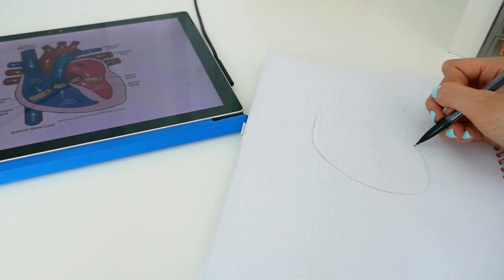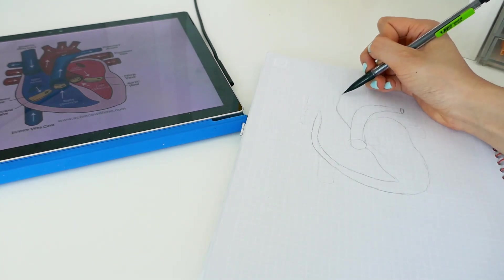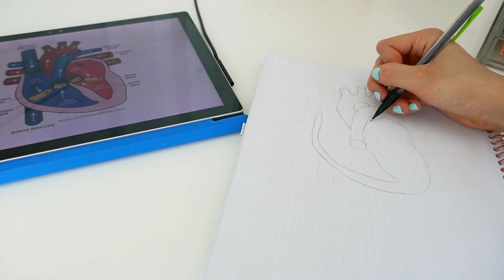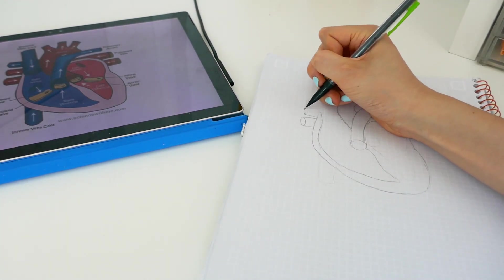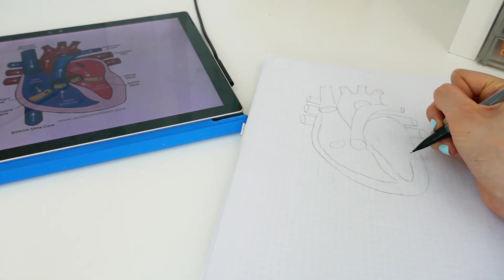Once you've done that, you're gonna take it off and then just give it a darker trace. Although this is optional, it's not really necessary. I find it's just easier to outline the diagram, which we will be doing next.